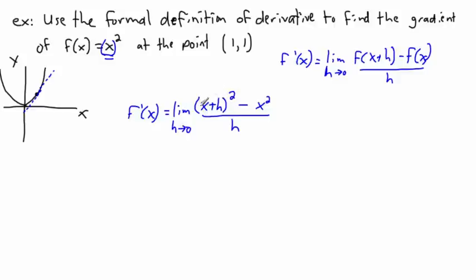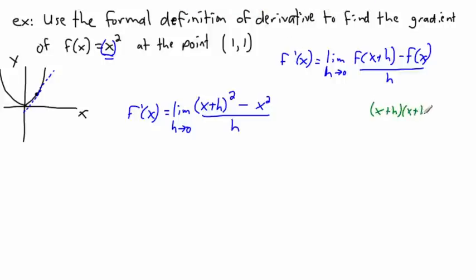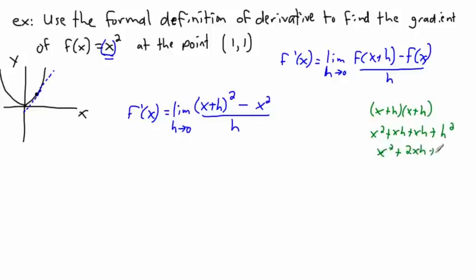Let me expand (x + h)². It's not just x² + h² — that's what a lot of students think. So I write it out as (x + h)(x + h) and use FOIL: first times first gives x², outside gives xh, inside gives xh, last gives h². That gives me x² + 2xh + h².